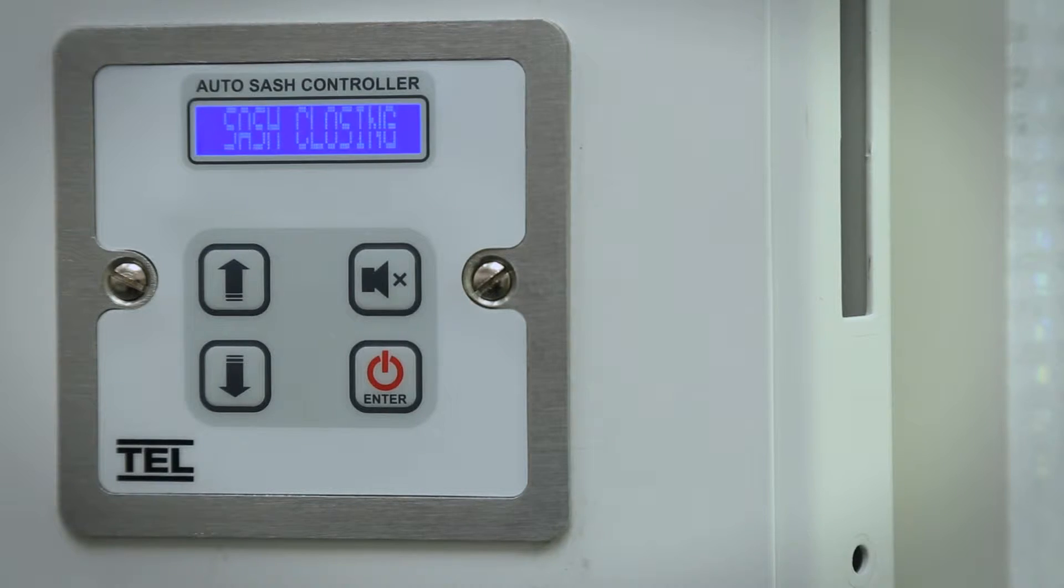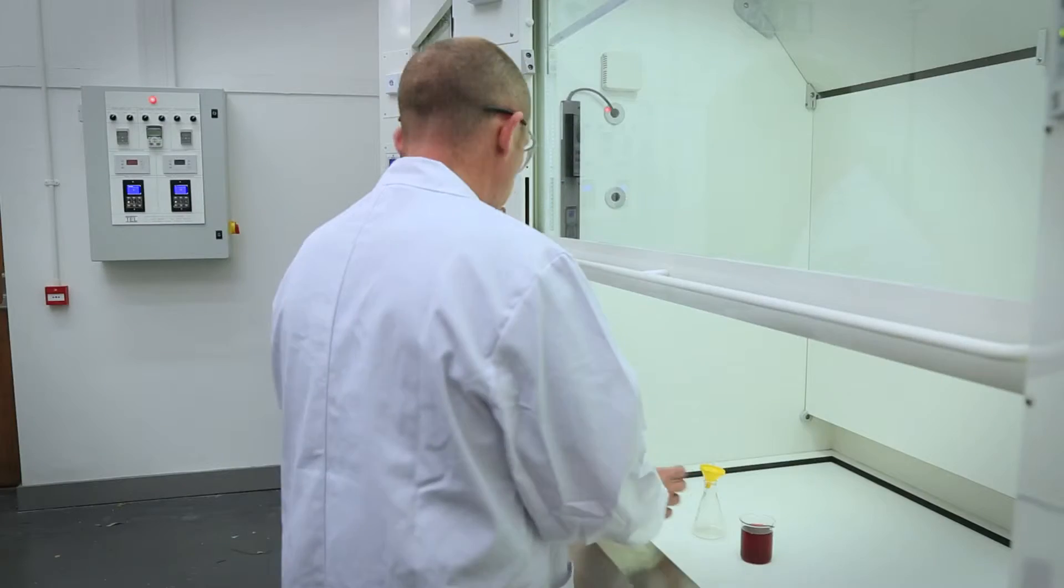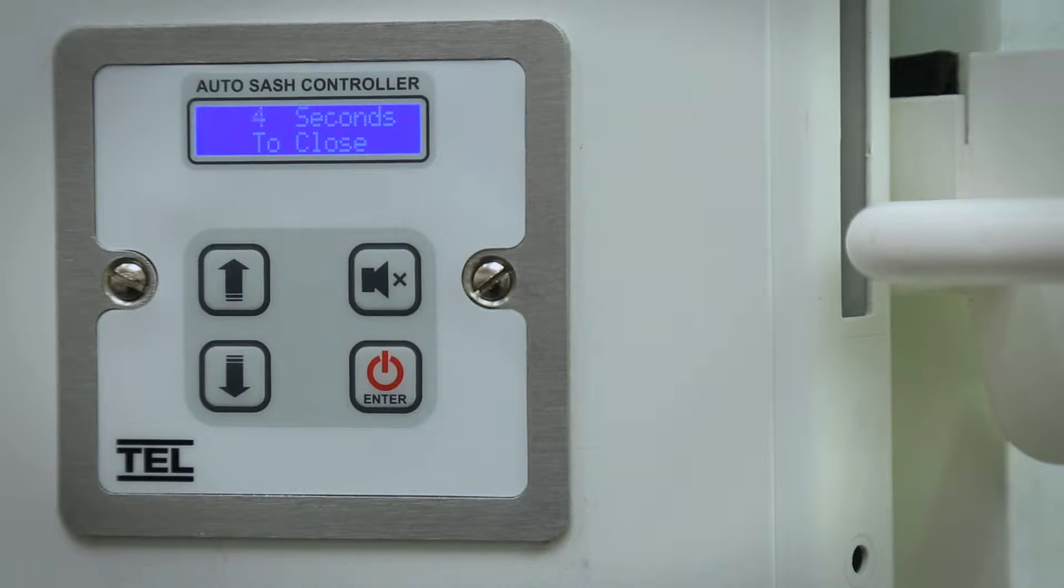The auto sash will automatically stop closing if a user is detected during the closing cycle. The sequence is reset once the user walks away.